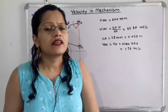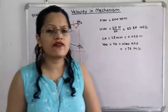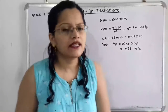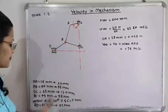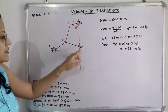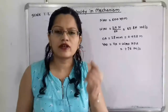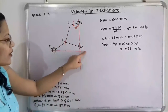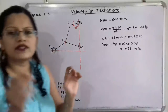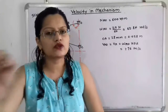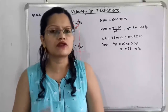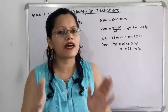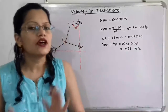Now, the path of travel of the slider is given as a horizontal path, 11 mm below the point C. So again, as per scale, we take 11 × 2 = 22 mm below point C, and from that point we draw the path of the slider in the horizontal direction. We draw this path also in the form of dash and dot, because this is the path of motion of the slider.